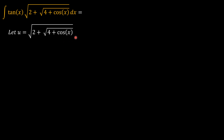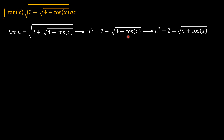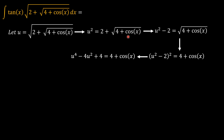Squaring both sides gives u squared equals 2 plus the square root of 4 plus cosine x. Pulling 2 to the left-hand side leaves the square root of 4 plus cosine x on the right. Squaring both sides again removes the square root, giving u to the power of 4 minus 4u squared plus 4 equals 4 plus cosine x. Subtracting 4 from both sides, we get u⁴ minus 4u² equals cosine x.